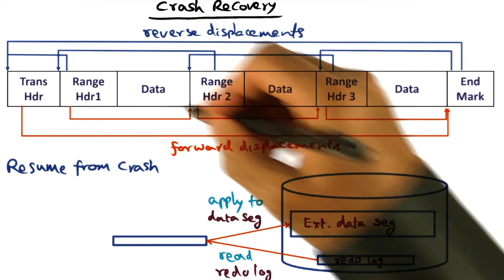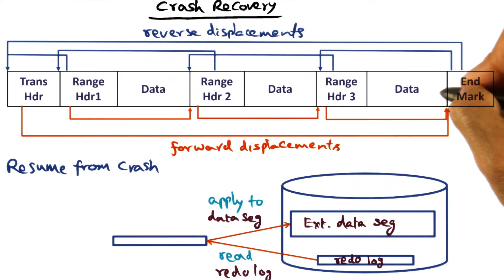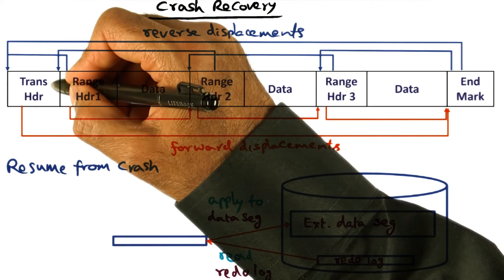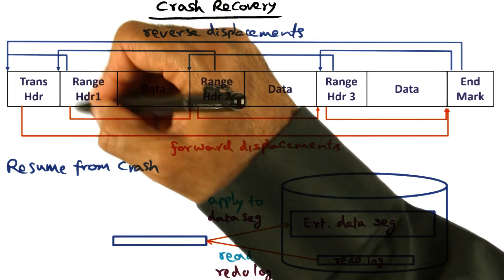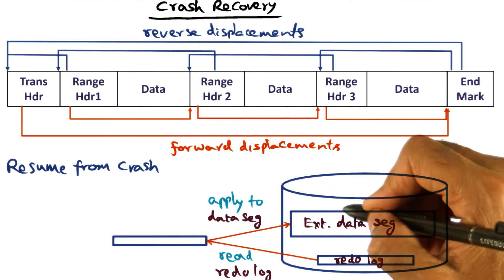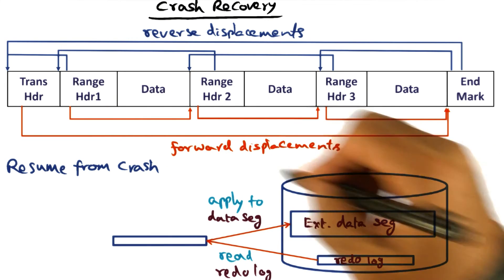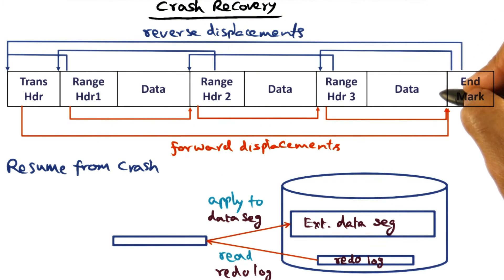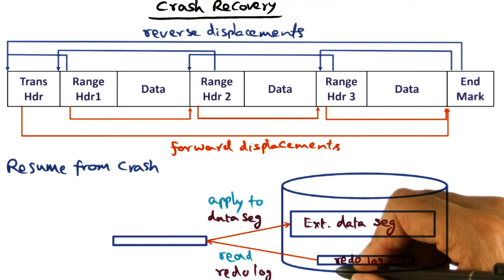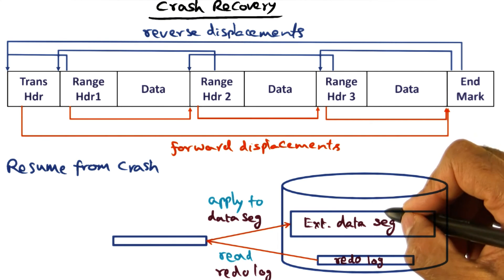All of that information is contained in the redo log record: the transaction, what address range is being modified, what external data segment that particular address range corresponds to. All that information is contained in the redo log record. So we can take that and apply it to the external data segment.